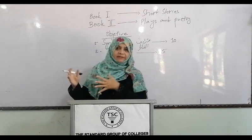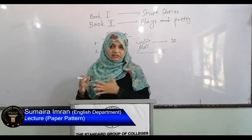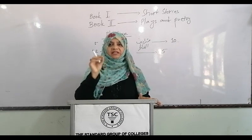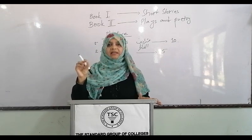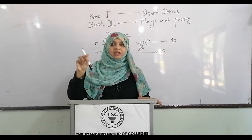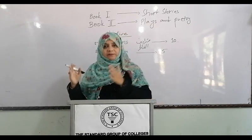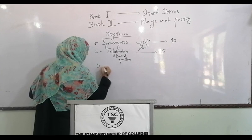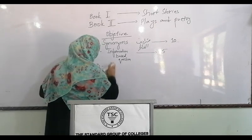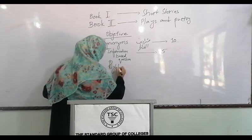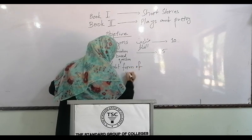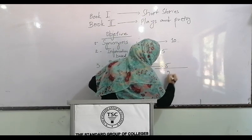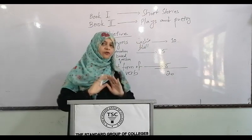The third objective question involves grammar — specifically the right form of the verb. You are given options and must choose which one is grammatically correct. This question is also worth five marks. If you count all these marks — ten plus five plus five — that makes twenty marks for the objective paper.